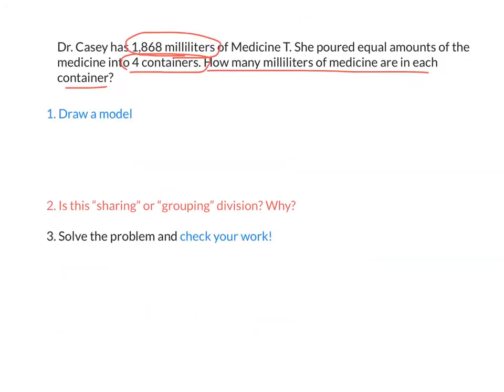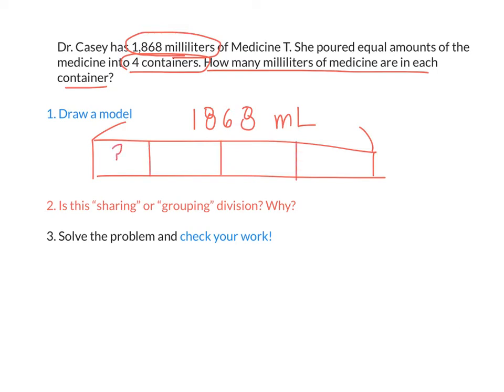So now that we know that the question is asking us to find how many milliliters of medicine are in each container, we can draw a model by showing that all together we have 1,868 milliliters of medicine. And we want to divide it equally into four containers. We're trying to find out how much is in one container. So let me ask you a question. Is this a sharing problem or grouping problem? Do we know the number of groups? How many groups are there? So if we already know the number of groups, then this must be a sharing division problem.